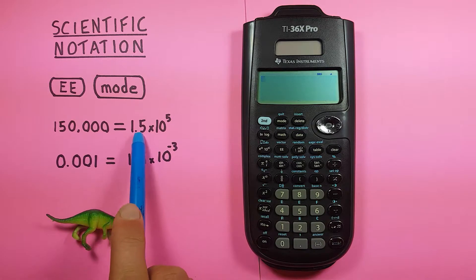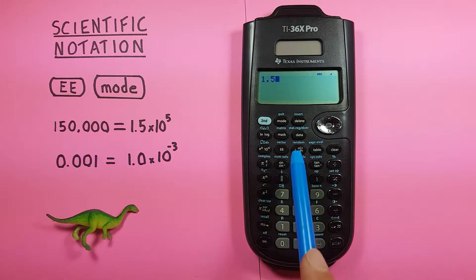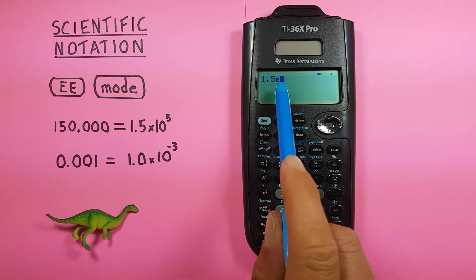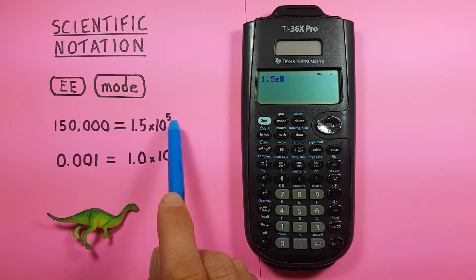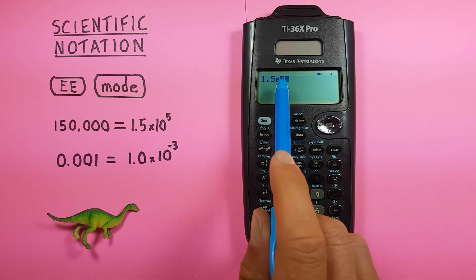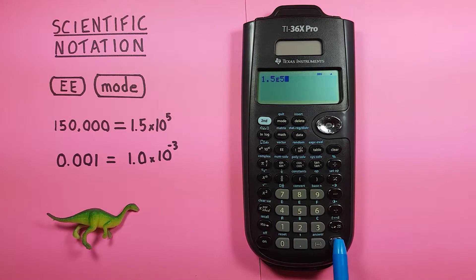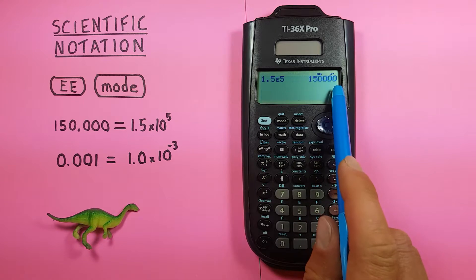We can write this out in scientific notation by going 1.5 and then using the EE key here. You can see we get an E on the screen there, that represents times 10 to the power of, and then we enter the exponent, which in our case is 5. Press enter, and you can see that's the same as 150,000.